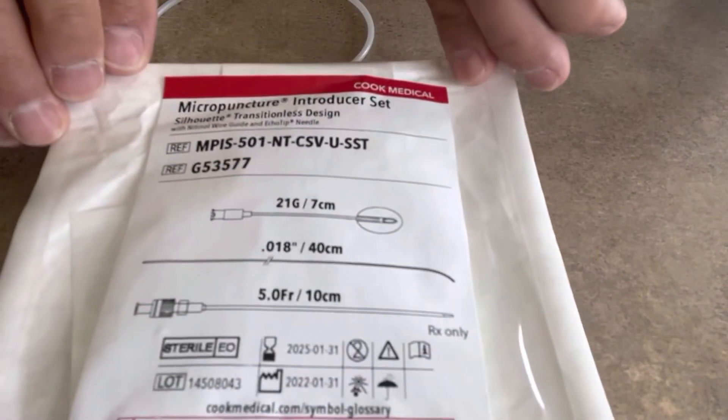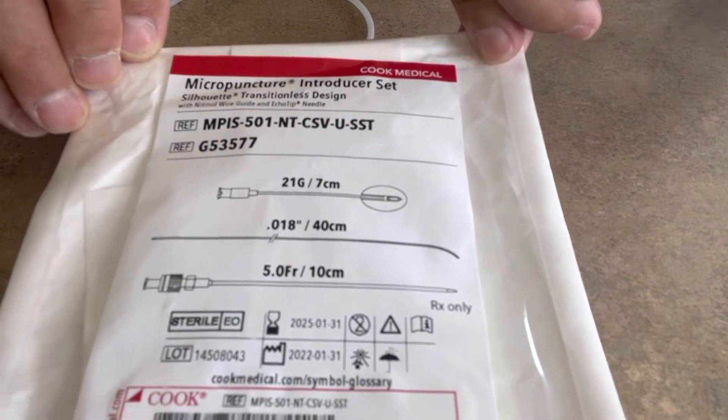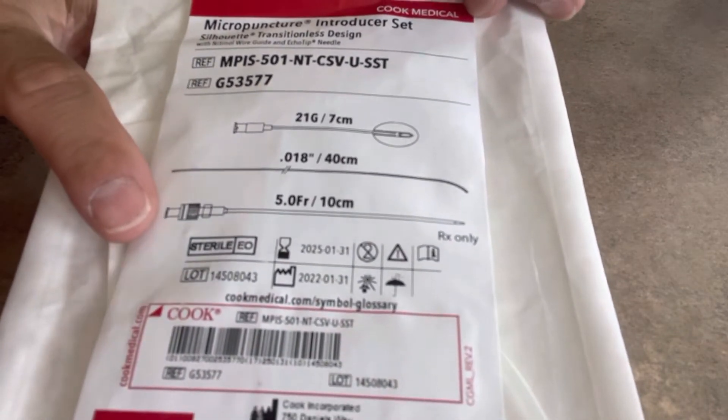These things were obtained from this kind of kit, a micropuncture introducer set. These are the important parts, the wire itself, which is 0.018 inches, and the 5 French dilator.